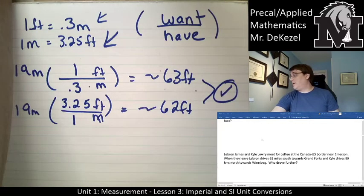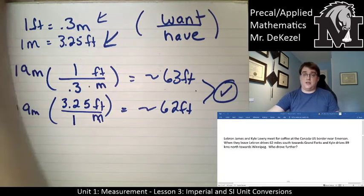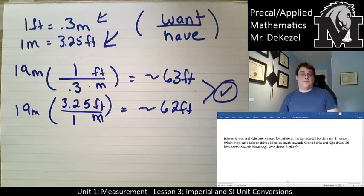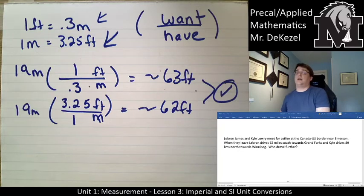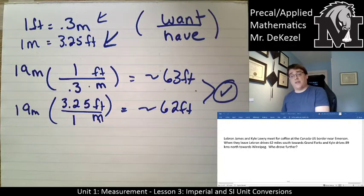Next example: LeBron James and Kyle Lowry are meeting for coffee at the Canadian-U.S. border near Emerson. LeBron drives 62 miles south towards Grand Forks and Kyle drives 89 kilometers north towards Winnipeg. Who drove further? They're in different units, so we need to convert them into the same unit so that we can compare.